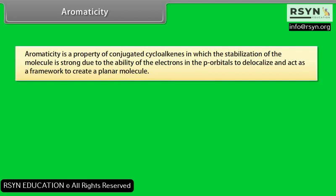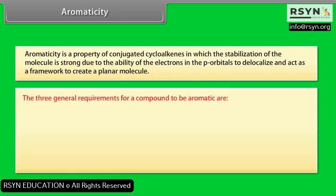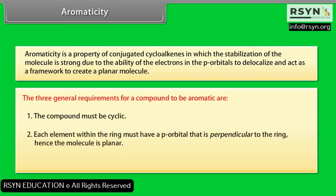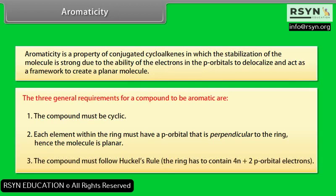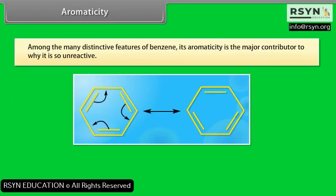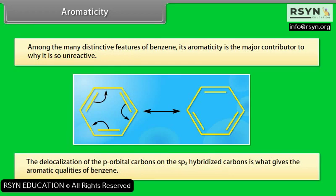Aromaticity. Aromaticity is a property of conjugated cycloalkenes in which the stabilization of the molecule is strong, due to the ability of electrons in the p orbitals to delocalize and create a planar molecule. The three general requirements for a compound to be aromatic are: 1. The compound must be cyclic. 2. Each element within the ring must have a p orbital perpendicular to the ring — hence the molecule is planar. 3. The compound must follow Hückel's rule: the ring must contain 4n+2 p orbital electrons. Among benzene's distinctive features, its aromaticity is the major contributor to its unreactivity, due to delocalization of p orbital electrons on the sp2 hybridized carbons.